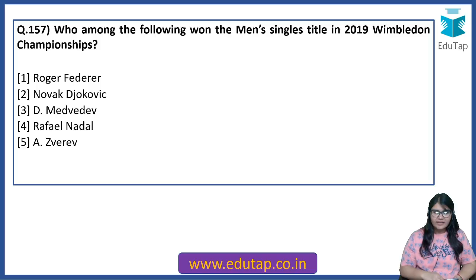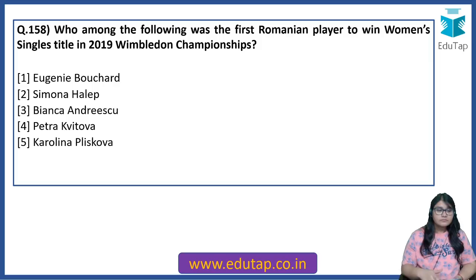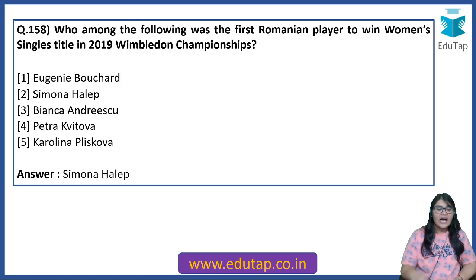Who among the following won the men's singles title at the 2019 Wimbledon Championship? The answer is Novak Djokovic. Who among the following was the first Romanian player to win the women's singles title at the 2019 Wimbledon Championship? The answer is Simona Halep. Just memorize these two things.